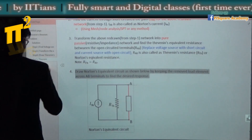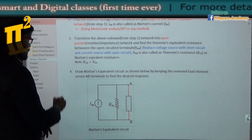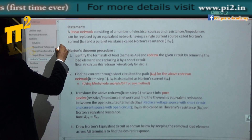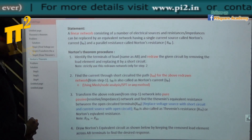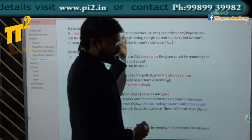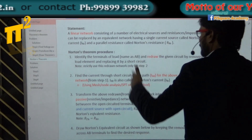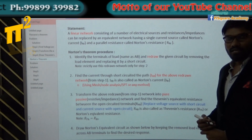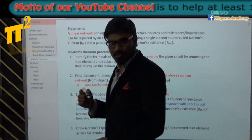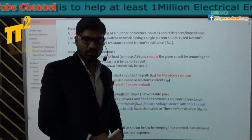Now let's go to Norton's theorem. As I said, Thevenin's and Norton's are derived from the same concept. The statement is: a linear network consisting of many electrical sources, resistances, and impedances can be replaced by a single current source and a parallel resistor. Previously it was a voltage source with a series resistor; here it is a current source with a parallel resistor.